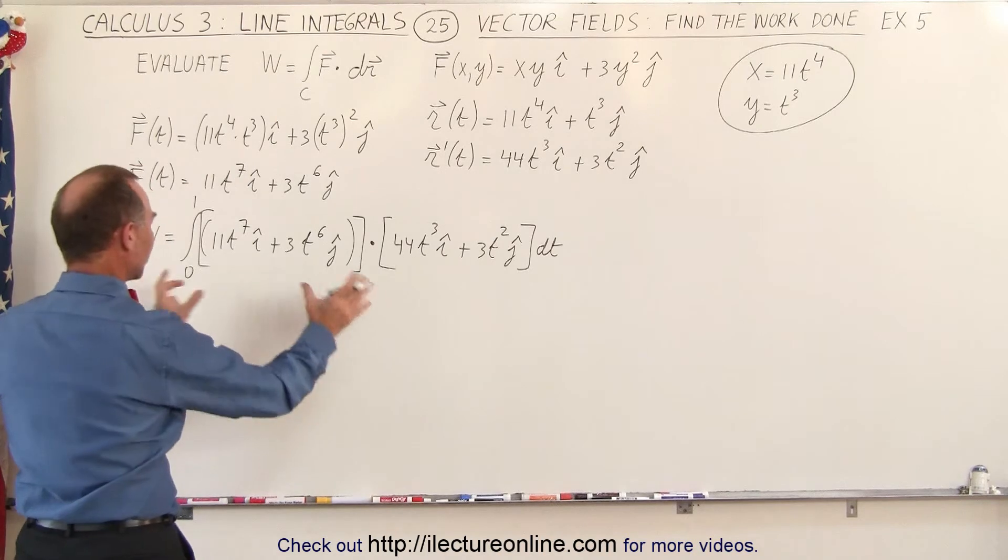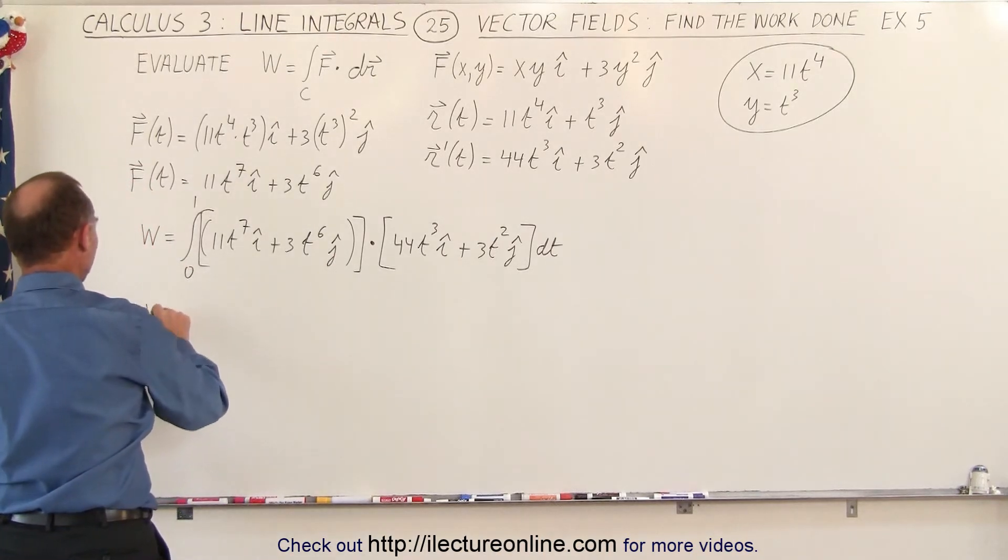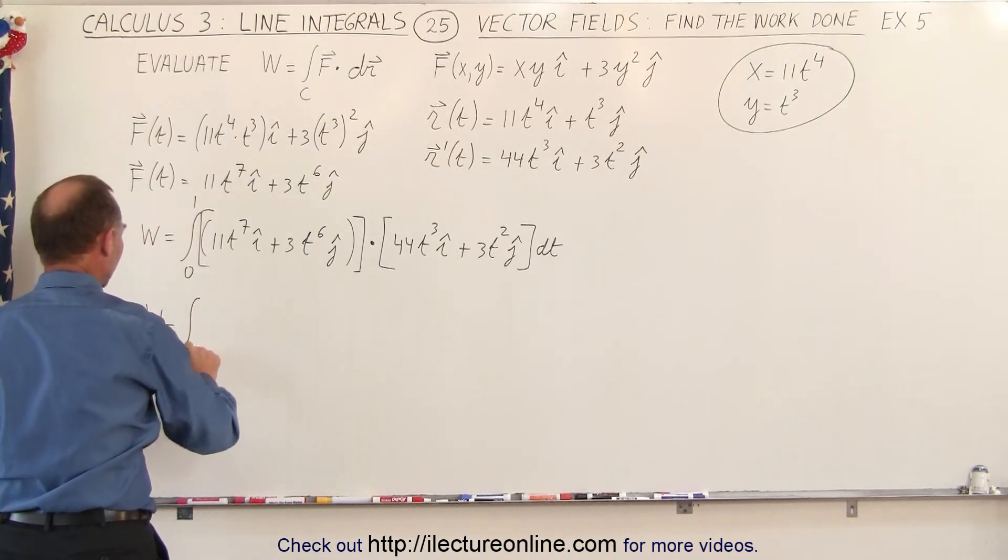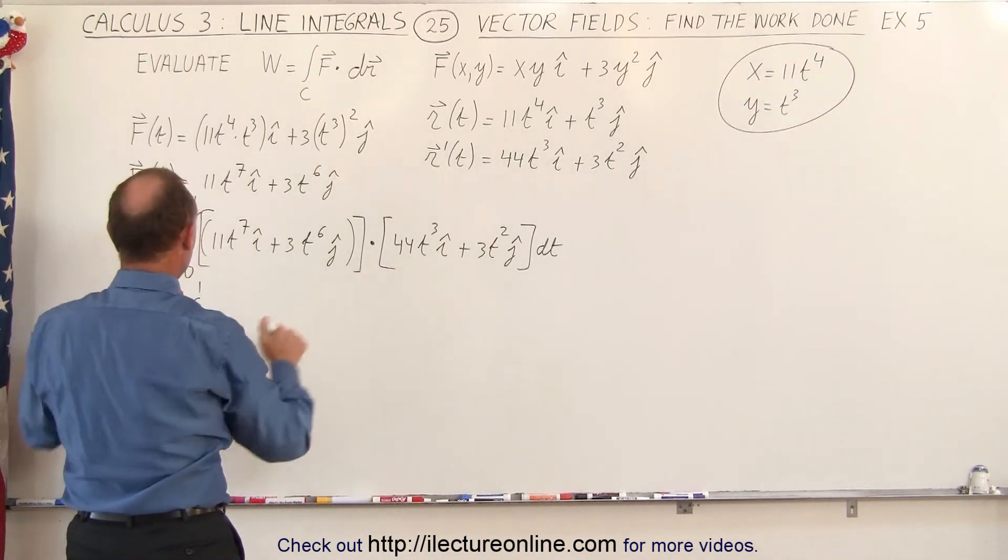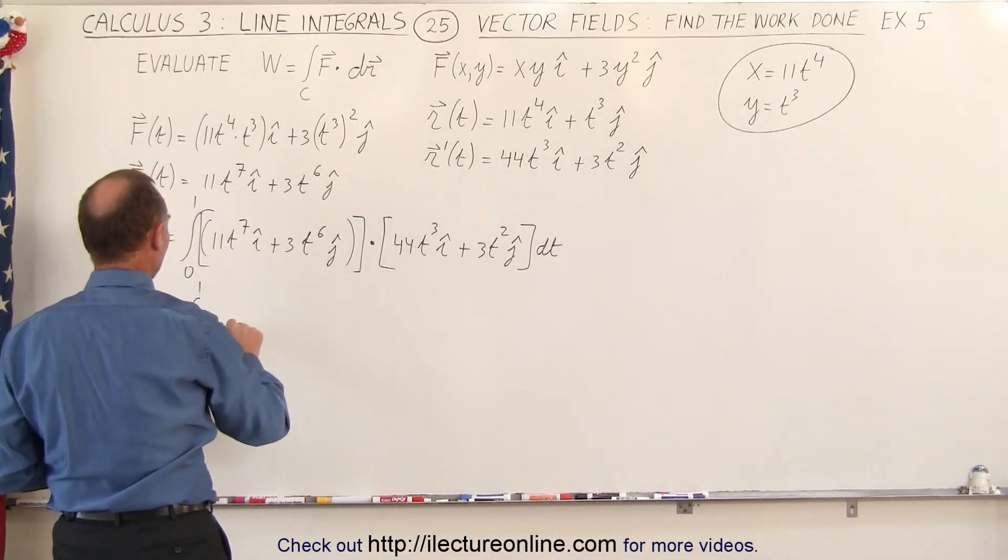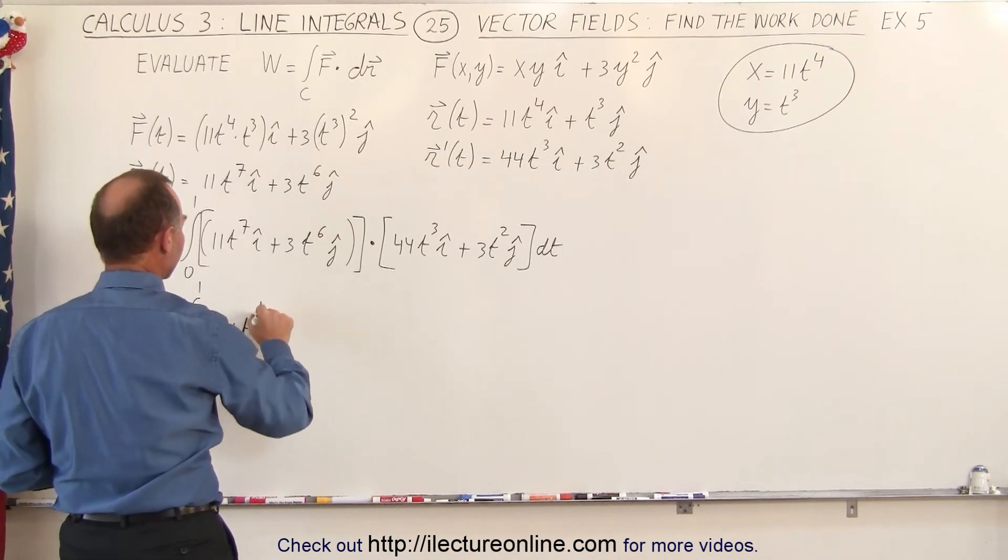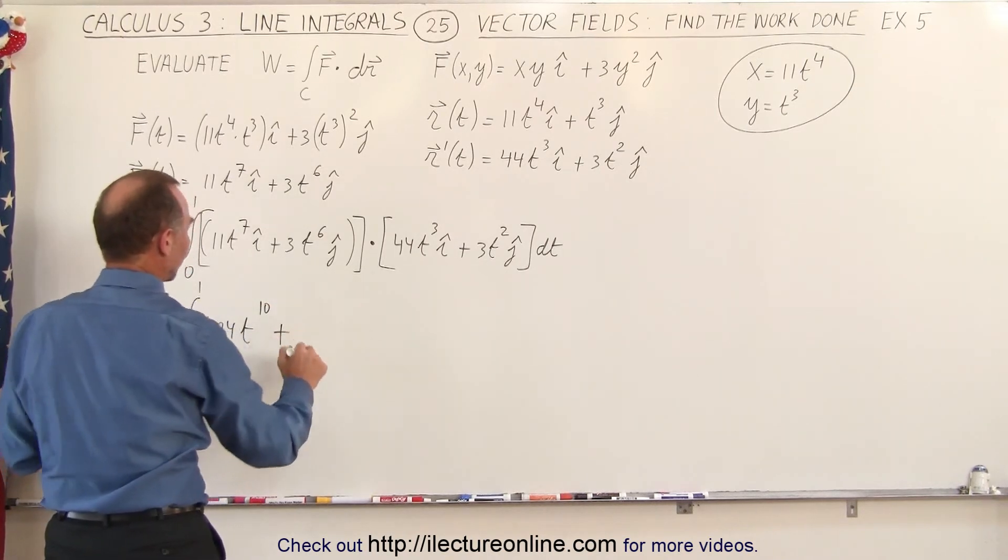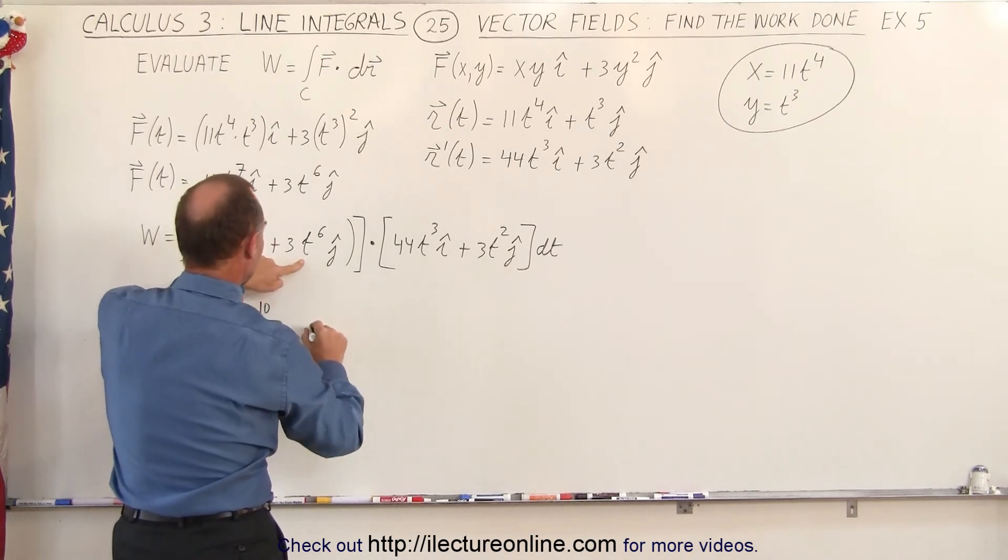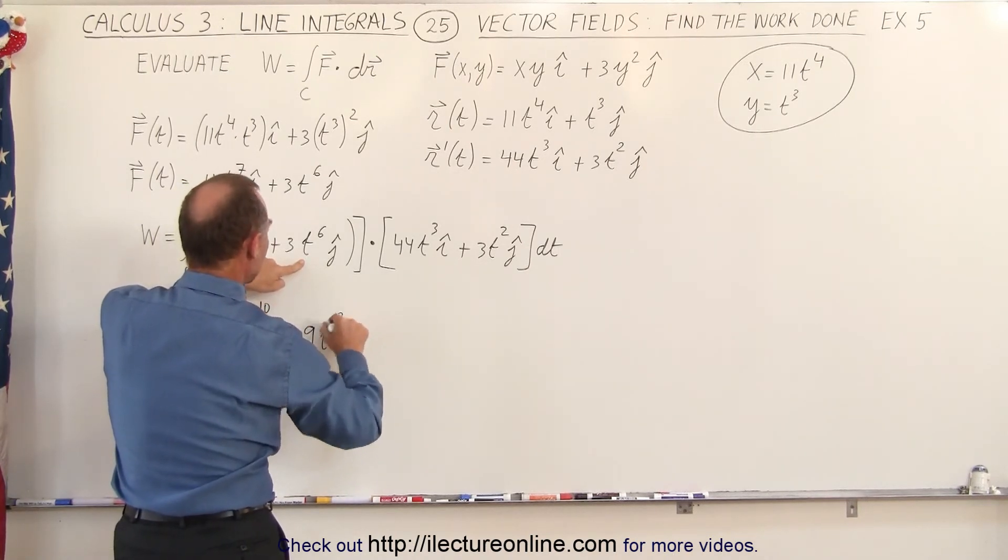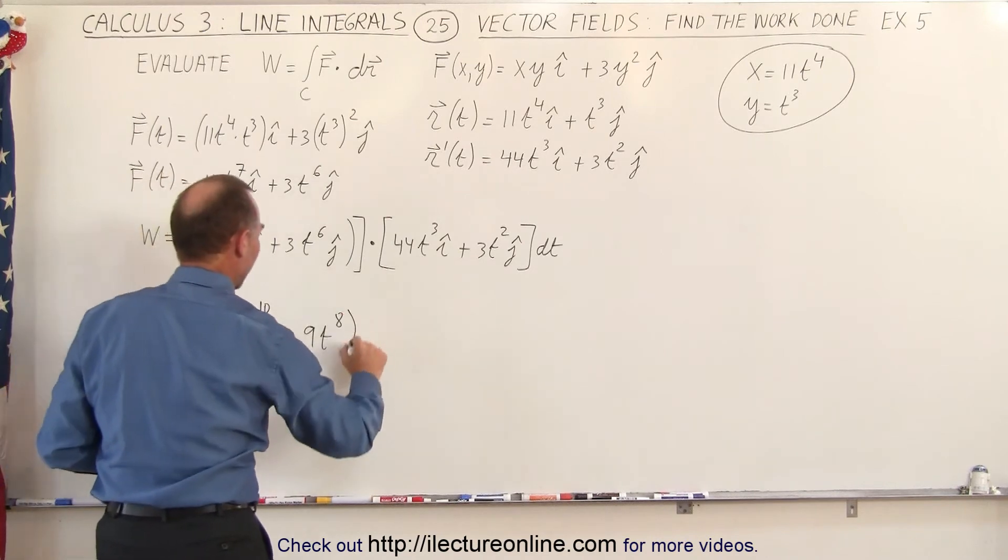So when we multiply these together, we get the following. The work done is equal to the integral from 0 to 1. Multiplying the i components together, we get 484t to the 10th power, plus we multiply the j components together, we get 9t to the 8th, and the whole thing times dt.